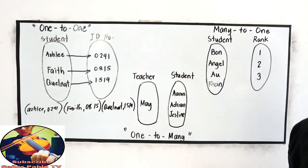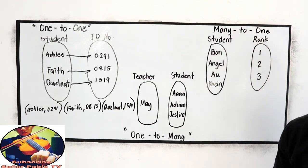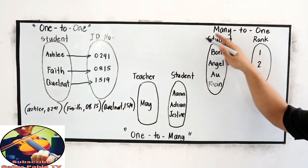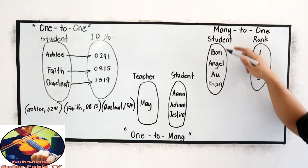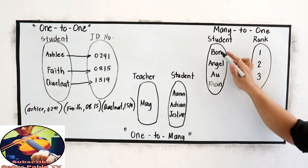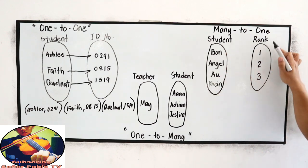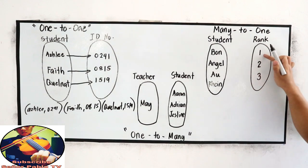Now, let's proceed to many-to-one correspondence. In our domain, we have the name of the students. Let's say, Bon, Angel, Au, and Rain. And their rank. We have the first, second, and third.